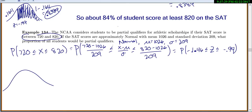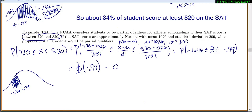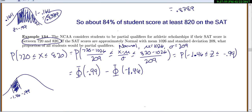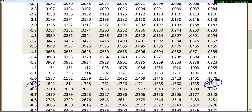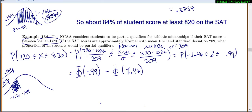Draw a picture: here's negative 1.46, here's negative 0.99, and I'm looking for the area in between. To find areas in between, you always subtract. Look up the bigger number — negative 0.99 — which we already found: 0.1611. That's the area all the way to the left of negative 0.99. Now subtract the area to the left of negative 1.46. Looking up negative 1.46 gives 0.0721. So 0.1611 minus 0.0721 equals 0.0890.